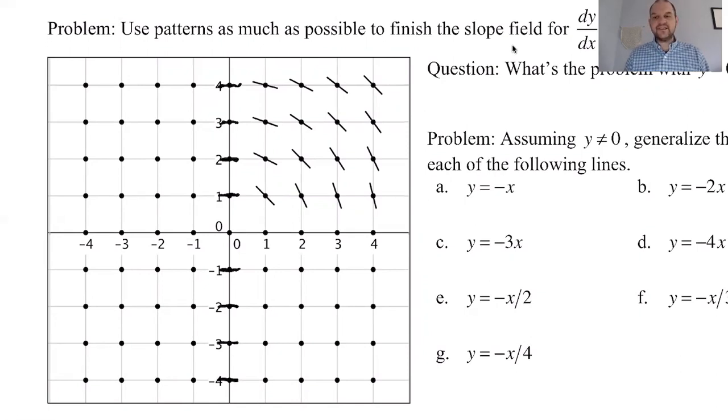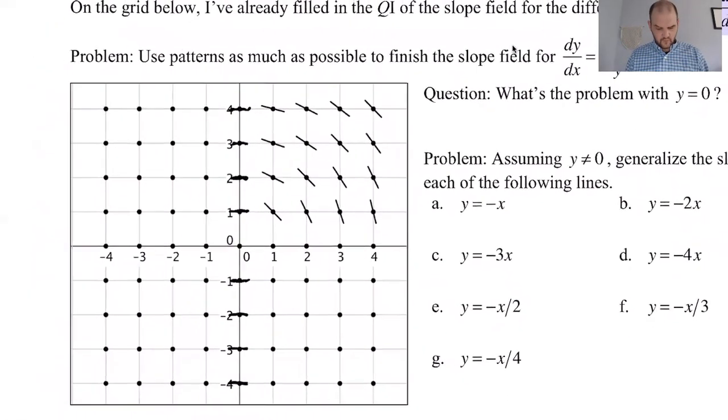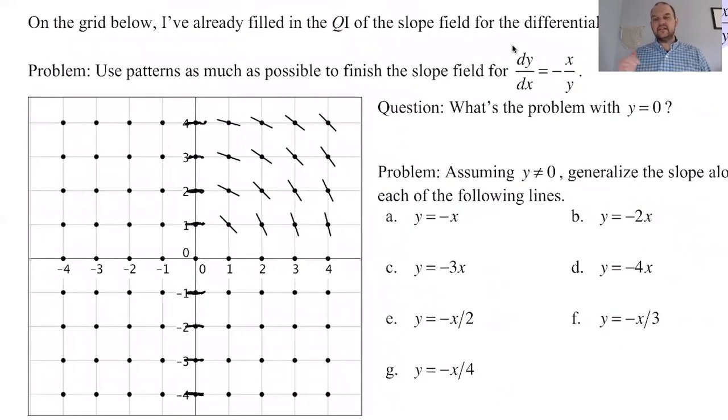What's the next best thing? When y is equal to one, if y is equal to one and dy/dx is negative x over y, then the slope is just negative x. So at the point negative one one, the slope will be positive one. At negative two one, the slope will be positive two. What I'm doing is I'm aiming. So I'm starting at this point and I'm aiming here and then I'm drawing my little segment. Because it's over one and up two.